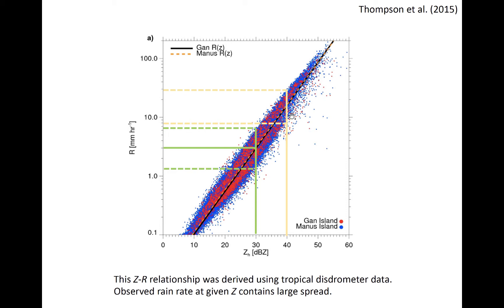At 40 dBZ in yellow, the absolute uncertainty of rain rate is even larger, with a potential rain rate roughly spanning from 8 to 30 millimeters per hour.